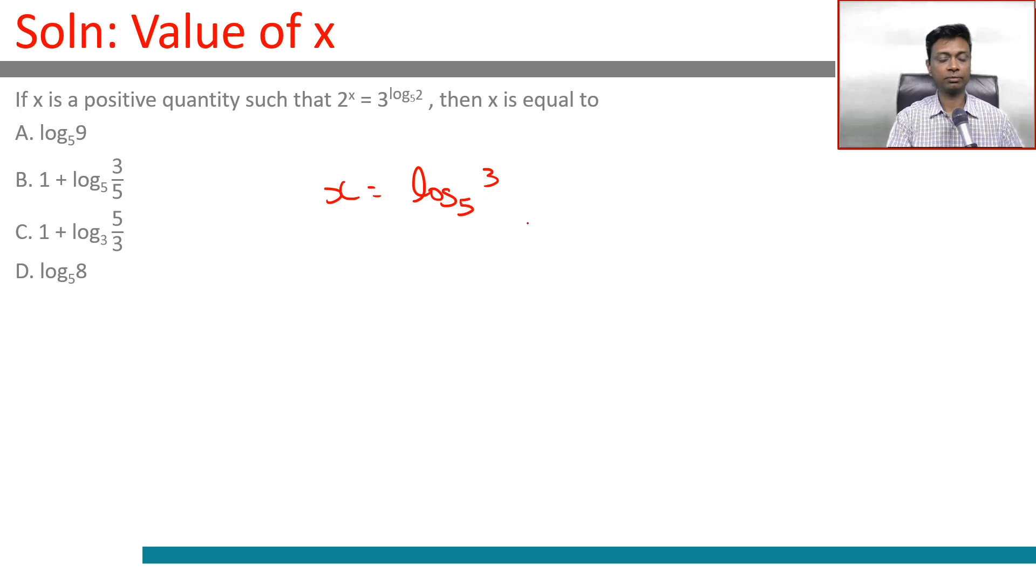Which is not this, which is not this. It should be one of these two. See, this is 1 plus log_5(3) minus log_5(5).